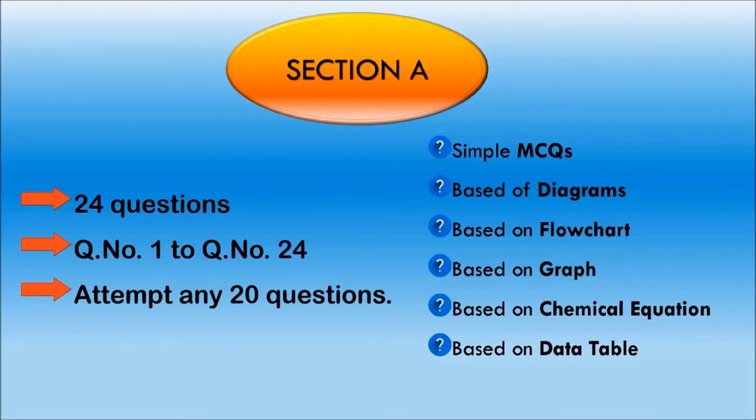So, it's a simple question and you have four options below. Hence, you have to choose the correct option. Whereas, the others are the multiple choice questions based on the data given in different forms as listed here on your screen. Now, let's see Section B.